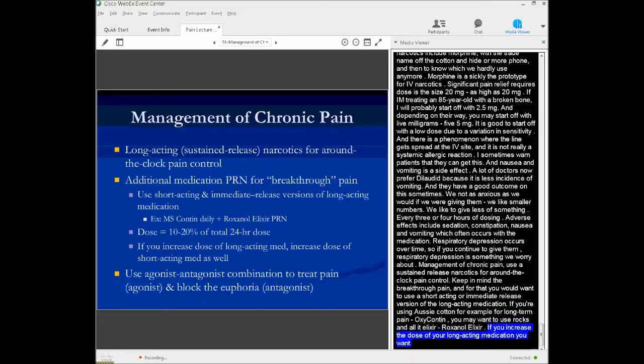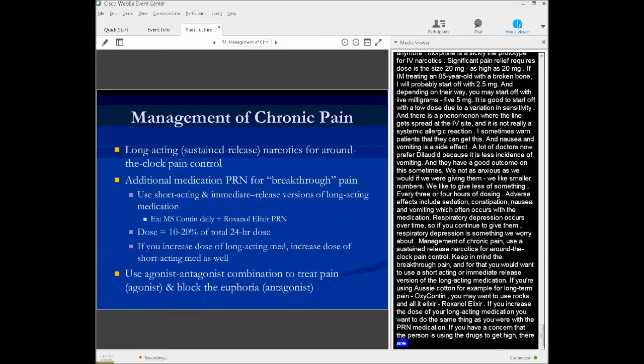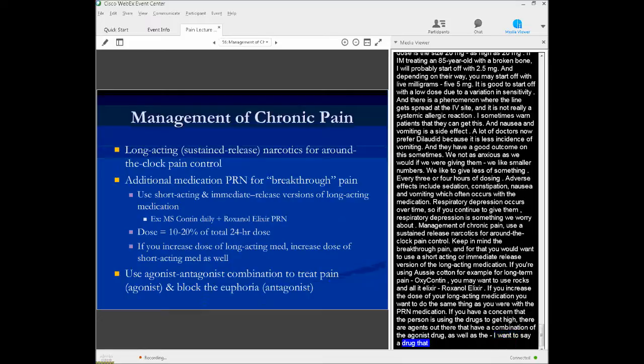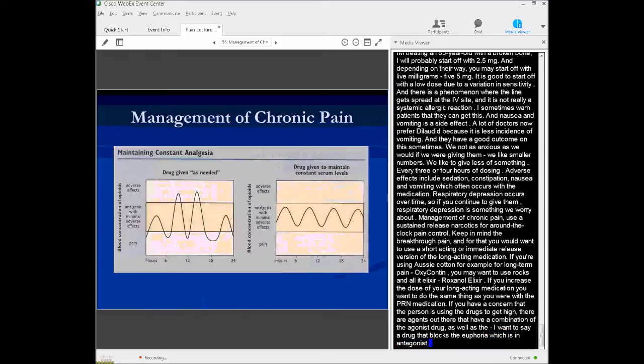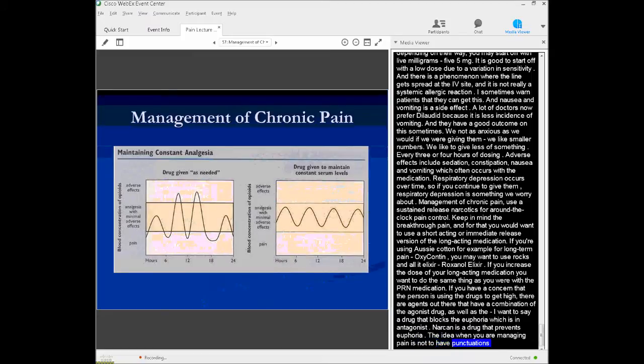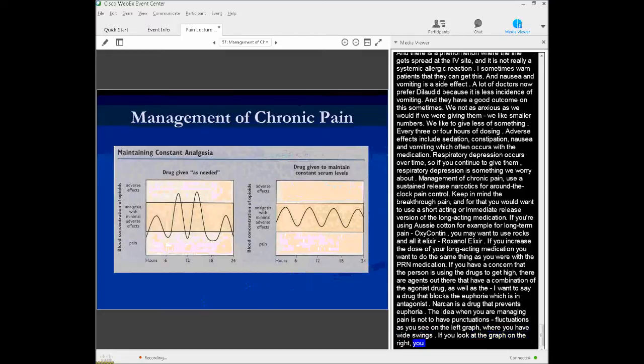The idea here when you're managing pain is not to have fluctuations of pain like you see on the left side of the graph there, where you have wide swings between having adverse effects at the top and having persistent pain at the bottom. If you look at the graph on the right side there, you have just the amount of pain control without having adverse reactions, without having adverse side effects.